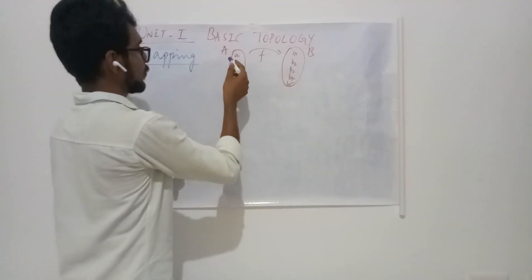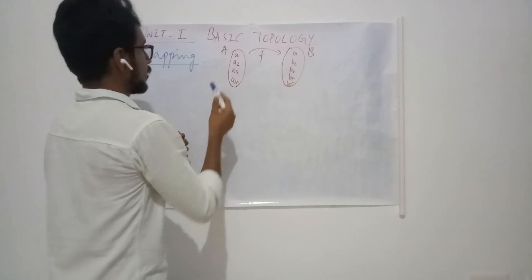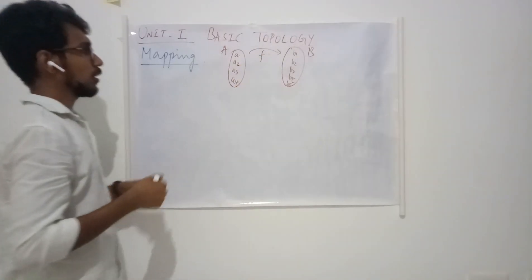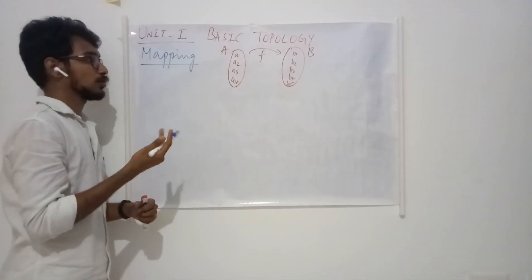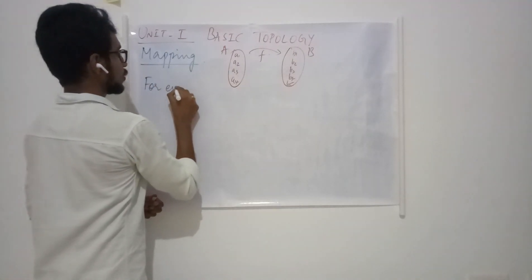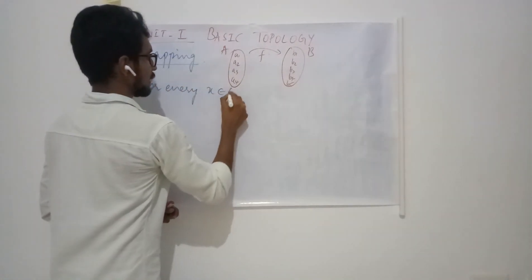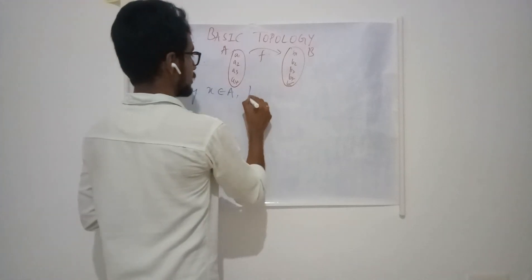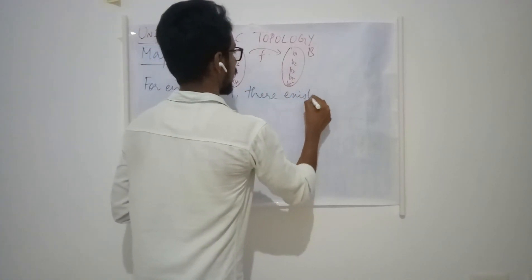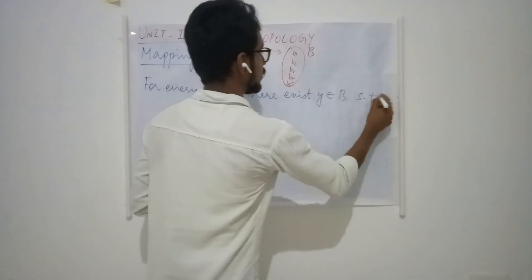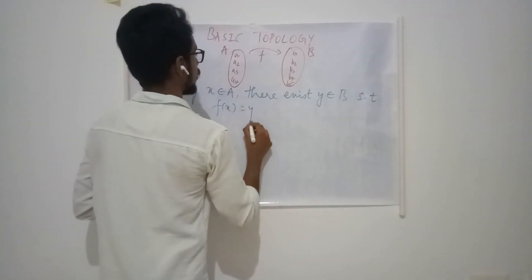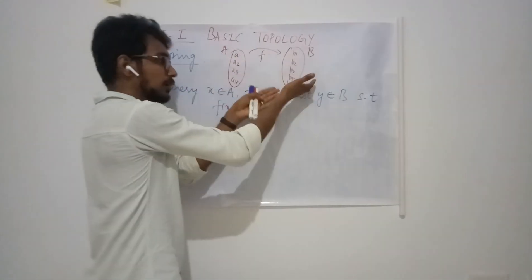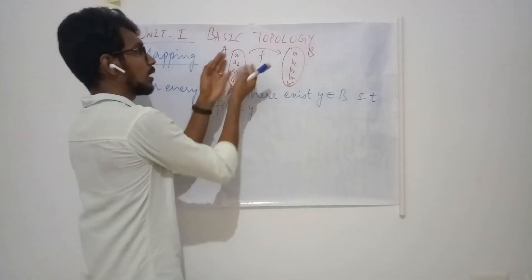Here I have given a diagram where these two are the sets — this is set A and this is set B — and I am defining something to relate these two sets. The mapping definition says that for every x in A, that is for all the elements of set A, I have to associate some y in B, satisfying the condition that f(x) = y. So for every element in this set I am associating some element in this set, and this association is called as the mapping.